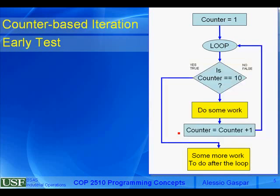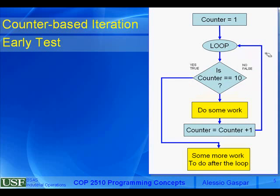Now we are still dealing with counter-based iteration, but implementing it using an 'early test.' The test is done first thing inside the loop. This is the other extreme — you do it last, or you do it first. The loop has the same global structure: counter initialized to 1, a test if counter equals 10, then do some work, then increment counter by 1.